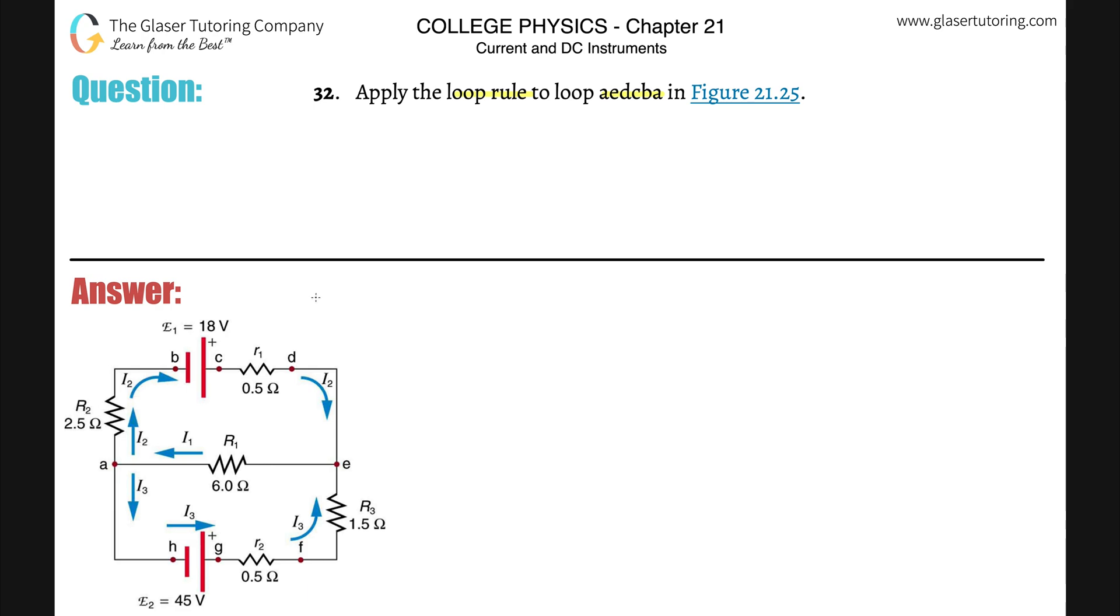So what I would first do is I would first just understand where the loop is. You've got to follow it in terms of the way you read it from left to right. So let's go from A to E to D to C to B and then back to A. In other words, you're looking at this loop here and you're going to be analyzing it in a counterclockwise fashion.